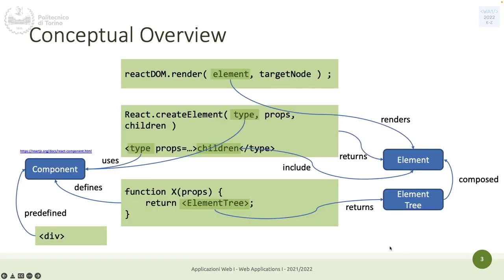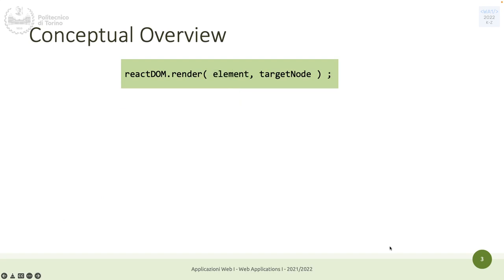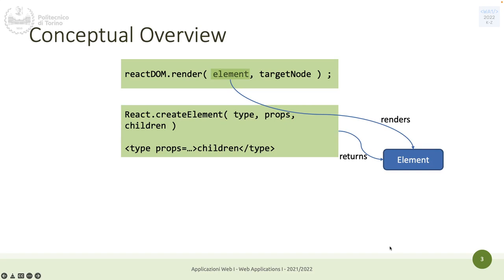Here is the conceptual overview of how things work in React. You have the render, or createRoot, that attaches an element to the target node — the one from getElementById. That element renders an element created with createElement or with JSX — they are the same. These elements include all their children, so a div with some buttons includes not only the div but also the children.